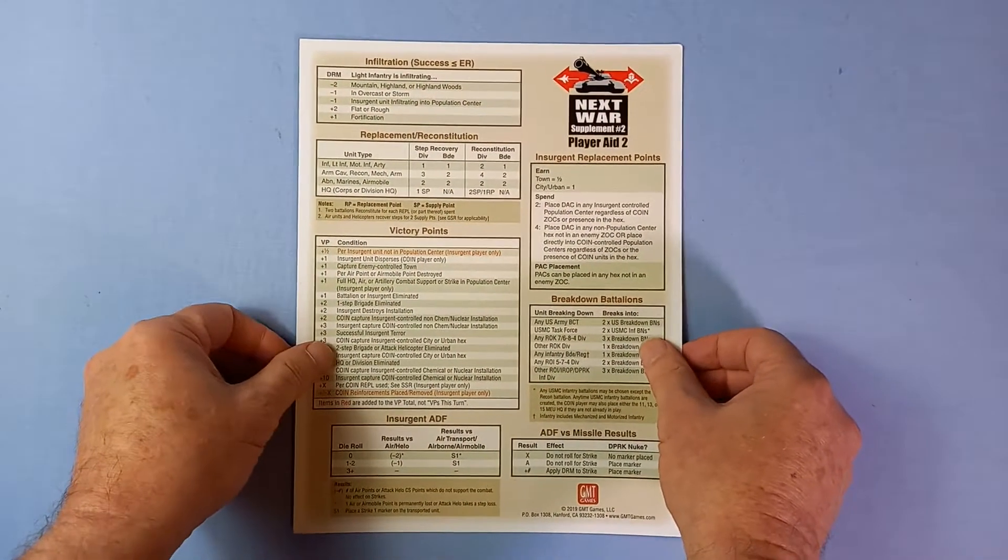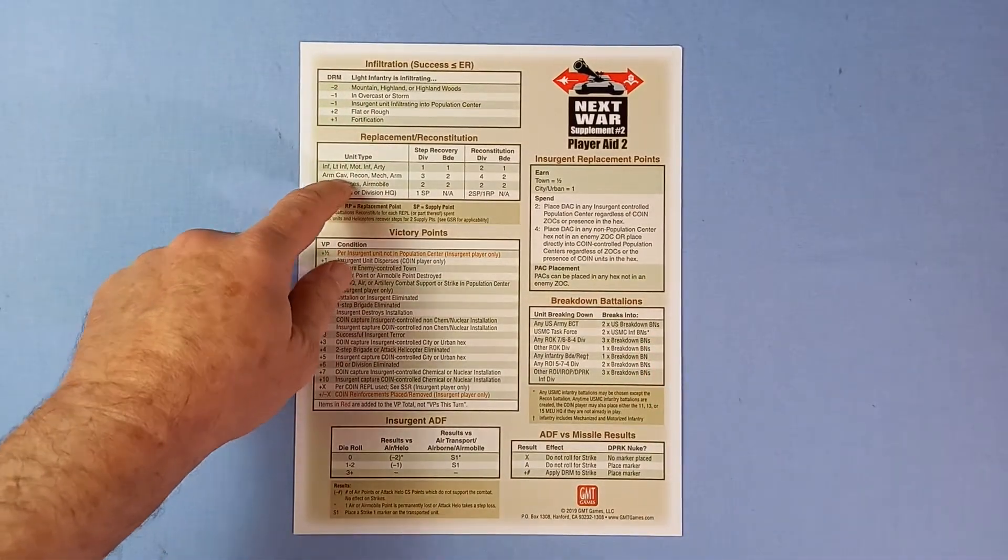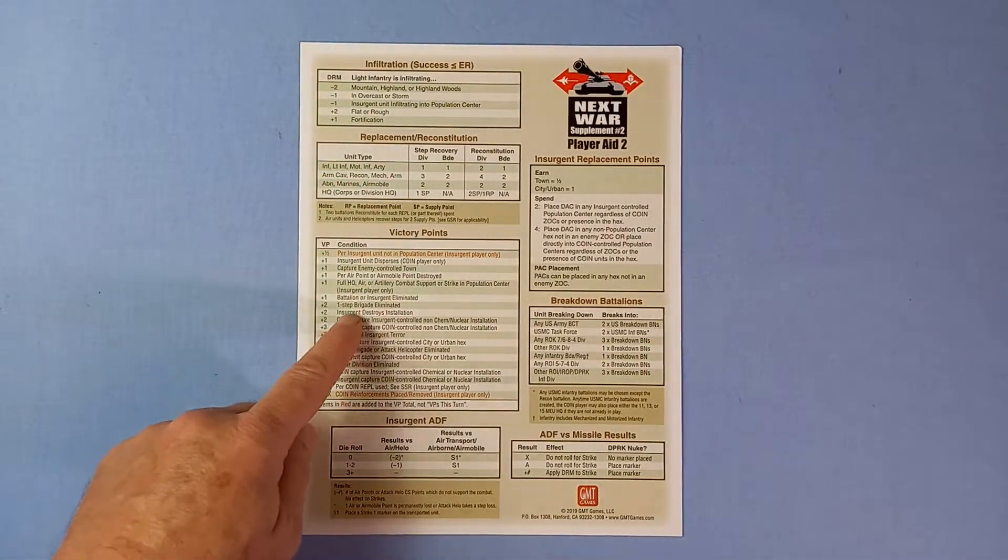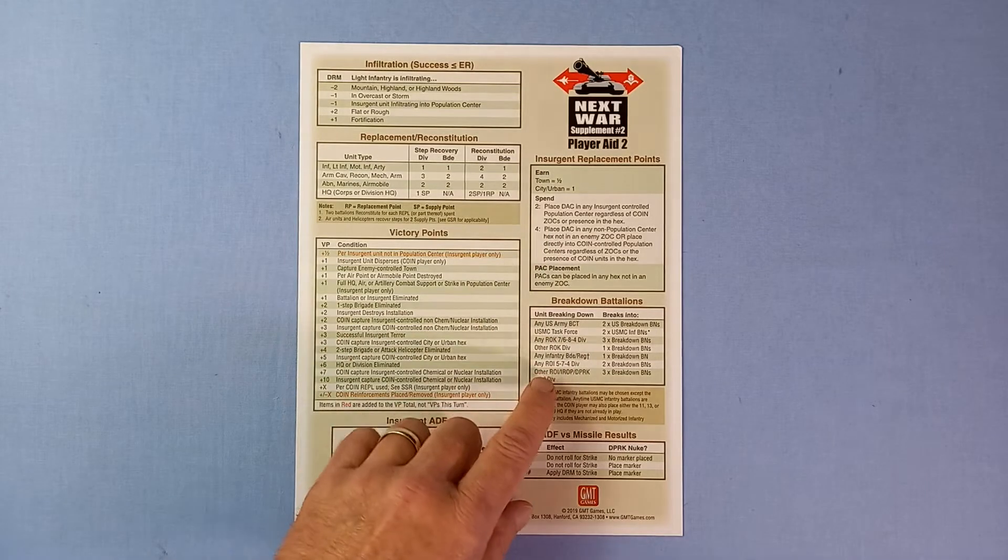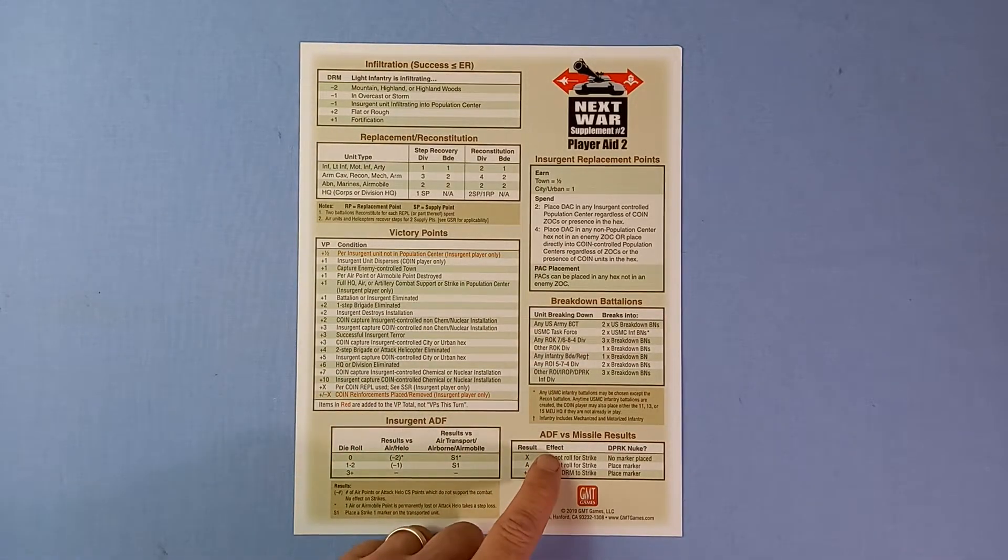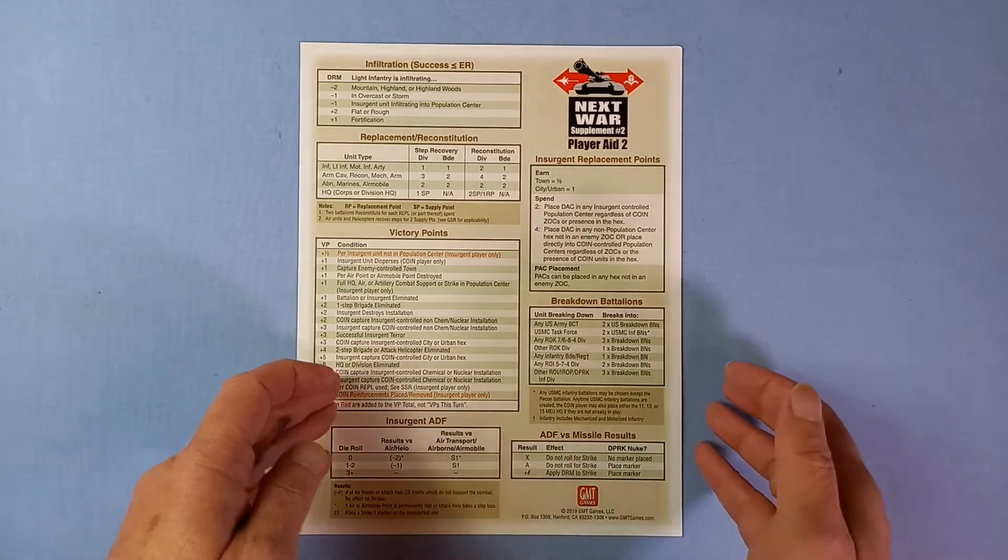And player aid 2 has more insurgency stuff. Infiltration. Replacement. Reconstitution. Victory points. Insurgent air defense fire. Replacement points. Breakdown battalions. Air defense fire versus missile results.